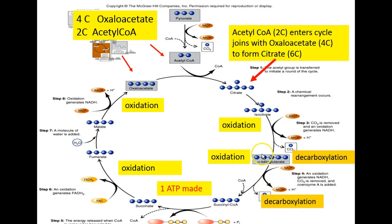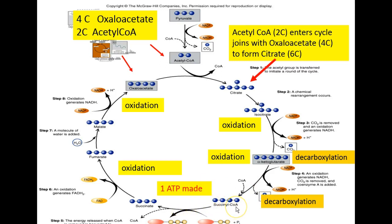Alpha-ketoglutarate in the Krebs cycle is oxidized and decarboxylated to produce a four-carbon compound called succinyl coenzyme A. So far, we have taken six-carbon citrate — formed by joining four-carbon oxaloacetate and two-carbon acetyl coenzyme A — and oxidized and decarboxylated it twice to produce succinyl coenzyme A. Notice the coenzyme A molecule is still present.